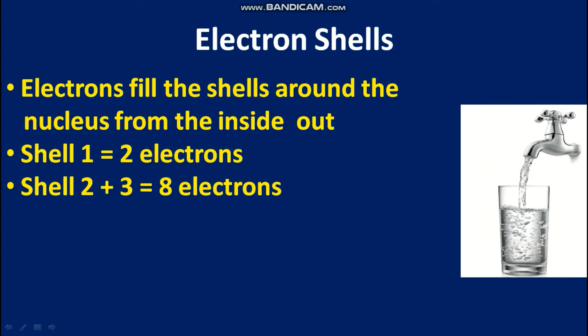What I mean by that is if you look at different atoms — and different atoms have a different number of electrons — the electrons will fill around the nucleus from the inside out, just like water fills in a glass from the bottom to the top. Shell number one can hold two electrons, and shell number two and three can hold eight electrons. Atoms are always happy when the outer shell or valence shell is filled with electrons.